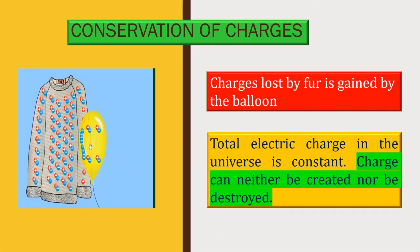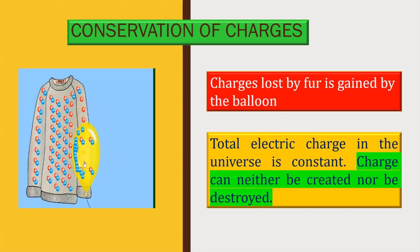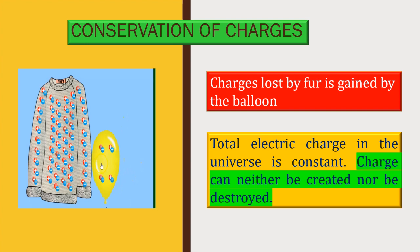When a fur coat is rubbed with a balloon, some amount of charges are transferred from the fur coat to the balloon due to friction between them. The fur coat is said to be positively charged and the balloon is said to be negatively charged. The charging of an object by rubbing is called triboelectric charging. Charges lost by the fur coat are gained by the balloon, so the total charge in the universe is a constant — charges can neither be created nor be destroyed, they can only be transferred from one object to another. This is given by the conservation of charges.